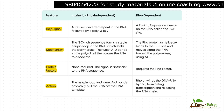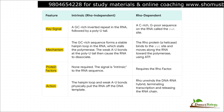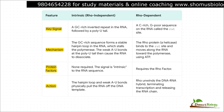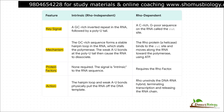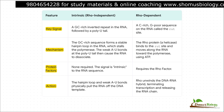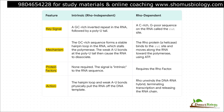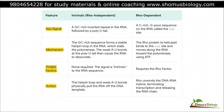The second method is Rho-dependent termination. This one requires help from a protein called Rho. Rho is a helicase — its job is to unwind things. It binds to a specific spot on the new RNA called the RUT site, and using ATP for fuel, it literally races along the RNA, catches up to the stalled polymerase, and then actively unwinds the RNA from the DNA, forcing it to let go. Mission accomplished.